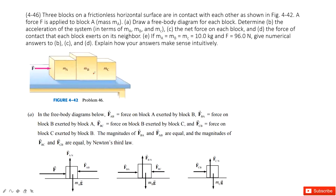Then we look at object B. For object B, there must be gravity and normal force, and also the force A to B pushing it. And then B will push object C, so there must be the force C to B from Newton's third law, with the same magnitude but opposite direction. For object C, there must be gravity and normal force, and also because object B pushes it, the force B to C.